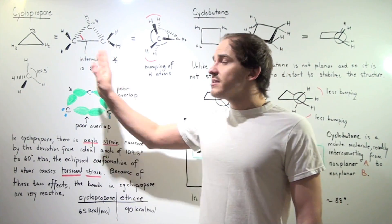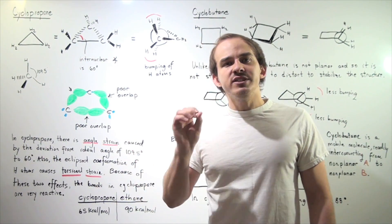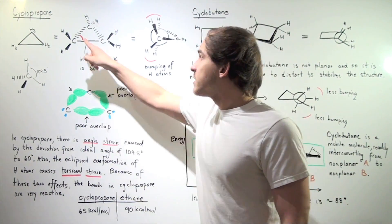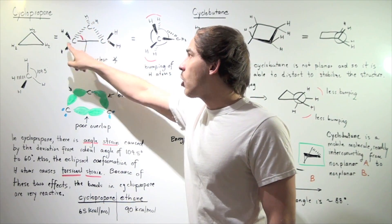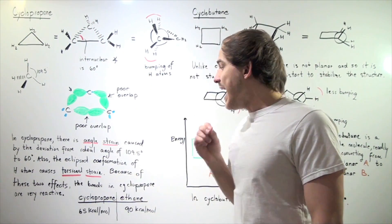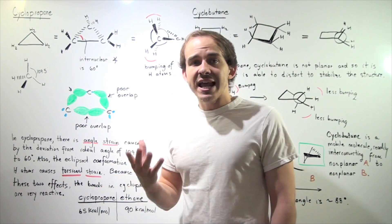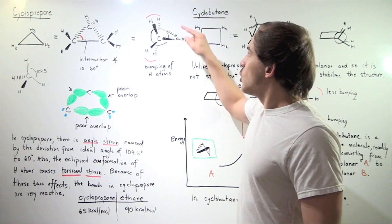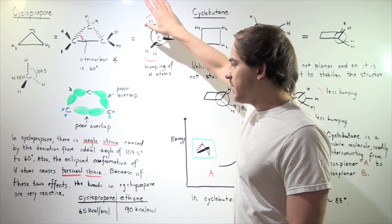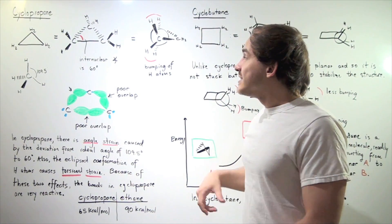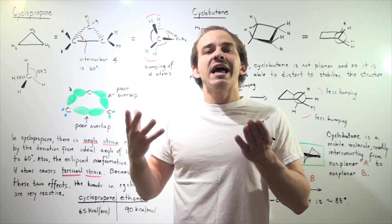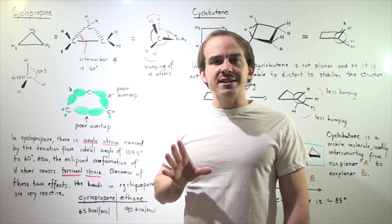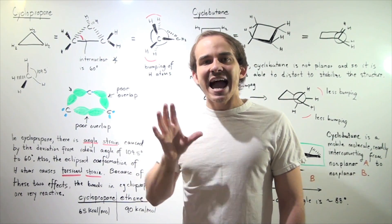So within cyclopropane, there are two destabilizing effects: angle strain, caused by the small 60° carbon-carbon-carbon angle, and torsional strain, created by the eclipsed conformation and the resulting bumping of H atoms. These two effects increase the overall energy of cyclopropane, destabilizing it and making it very reactive.